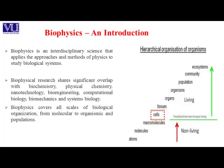A number of tissues when joined together form a particular organ — like cardiac tissues join to form the heart — and the heart when combined with veins and capillaries forms a system. A number of systems when joined together form an organism. We have a number of systems in our body: neuronal system, circulatory system, respiratory system, and excretory system. They together make up an organism.